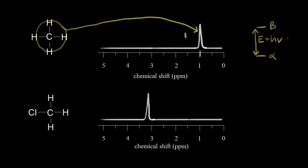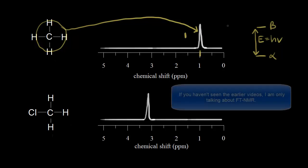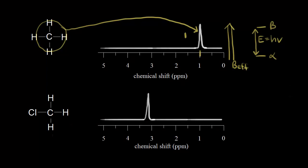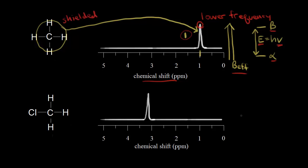The energy difference also corresponds to the effective magnetic field felt by a proton. The effective magnetic field controls the energy difference. If I have a certain effective magnetic field, I get a certain difference in energy between the alpha and the beta spin states. The energy corresponds to a frequency that's absorbed — this signal is a certain frequency, and this is a lower frequency signal. A low frequency gives a low chemical shift, so one is a low chemical shift here. The protons in methane are shielded compared to the protons in chloromethane.